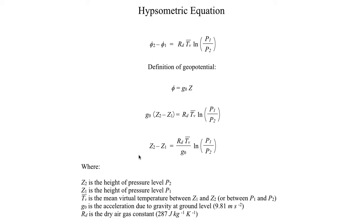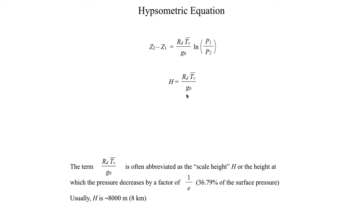The end result is the hypsometric equation. It's worth noting that the coefficient appearing in front of the logarithm is sometimes written as a single term, capital H, called the scale height or pressure scale height. That is the height at which pressure falls by a factor of 1/e compared to the surface pressure. If your surface pressure is 1000 mb, the scale height is roughly 8000 meters in any given atmosphere, and at that height your pressure would be roughly one-third of the surface value — around 368 mb.